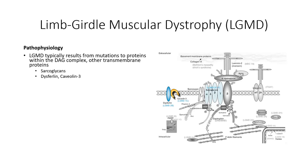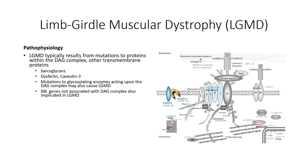Mutations to proteins found in other regions of the muscle fiber can also result in limb-girdle muscular dystrophy. Fukutin-related protein is found in the Golgi apparatus, involved in glycosylation during post-translational protein modification. It is likely that the dystrophy seen in this gene mutation results from disruption of glycosylation of proteins within the dystrophin-associated glycoprotein complex. Telethonin and myotilin are scaffolding proteins found within the Z-disc of myofilaments, and mutation to these proteins would be expected to disrupt the interaction between the myofilaments and the dystrophin-associated glycoprotein complex.